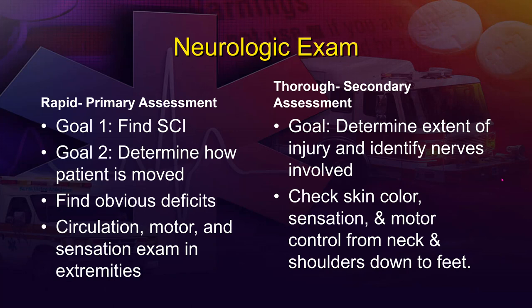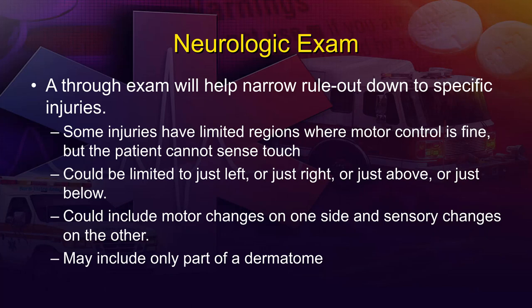Once transport begins, perform a thorough secondary neurologic exam. The first goal is to determine the extent of injury and loosely identify which spinal nerves or vertebral levels are involved. Check skin and CMS again, and determine whether the patient has sensation or motor function throughout their extremities and body. Sometimes you'll find deficits in specific regions or hemispheres but not others. If you can't narrow it down to very specific points, that's okay — identify the overall situation and manage appropriately based on the signs and symptoms you find.